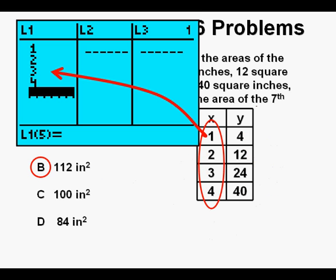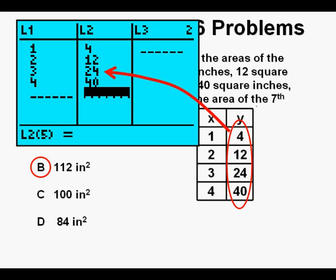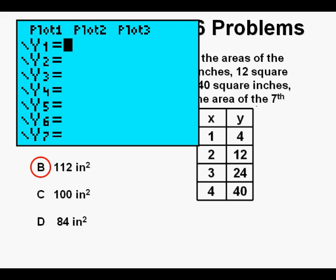Another way to do this is to go to our graphing calculator. We press STAT, then ENTER, then enter all the input values, the numbers of the figures, under the L1 column. Then we enter the output values in the L2 column. Next, we'll go to take a look at the points.